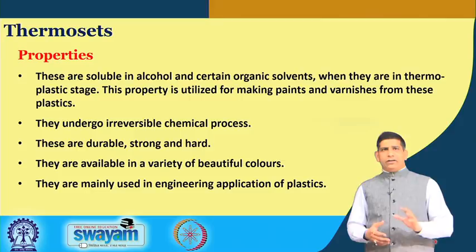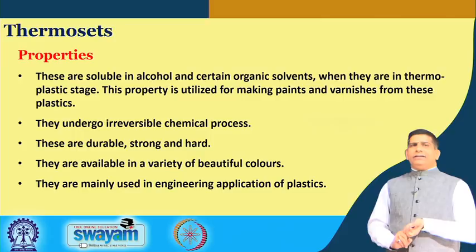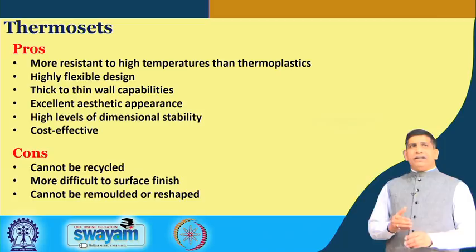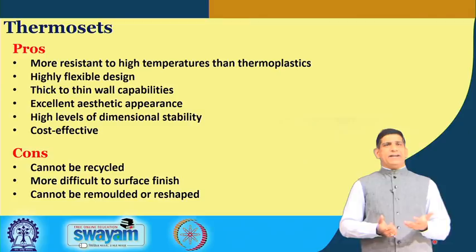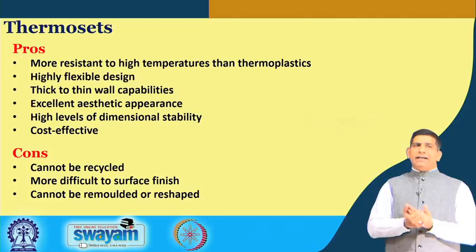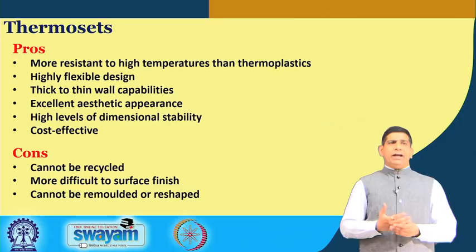Thermosets are soluble in alcohol and certain organic solvents when they are in the thermoplastic stage — a property utilized for making paints and varnishes. They undergo irreversible chemical processes; they are durable, strong, and hard. They can be made in beautiful colors and are mainly used for engineering applications. Most engineering applications use thermoset plastic, which is very difficult to recycle, but they have more resistance to high temperature — they will not melt. They offer highly flexible design, thick-to-thin wall capability, excellent aesthetics, and high levels of dimensional stability. However, the key drawback is that they cannot be recycled.